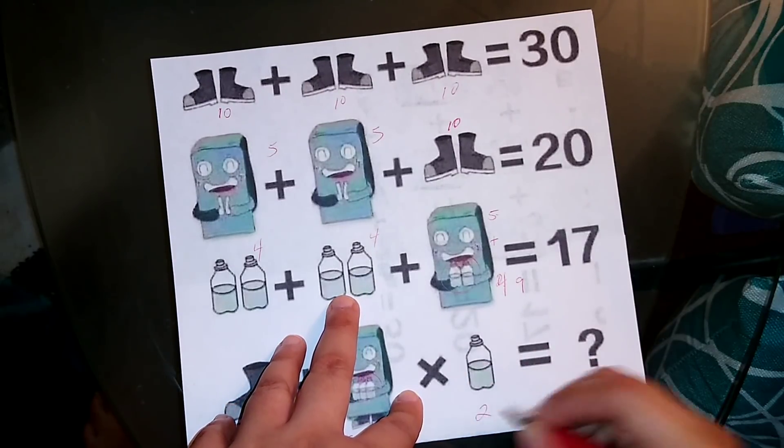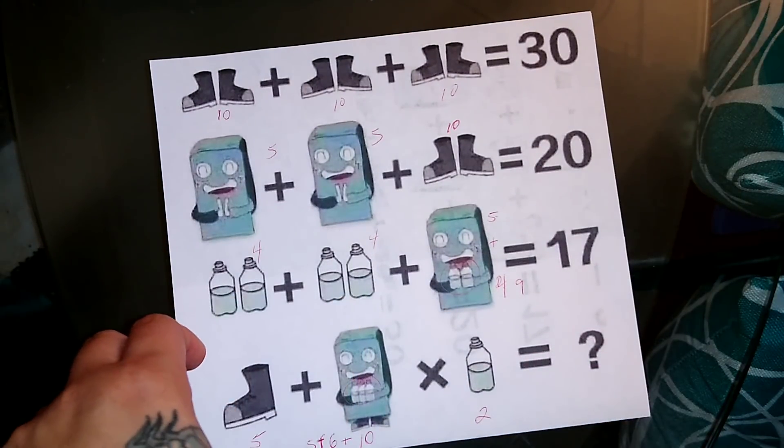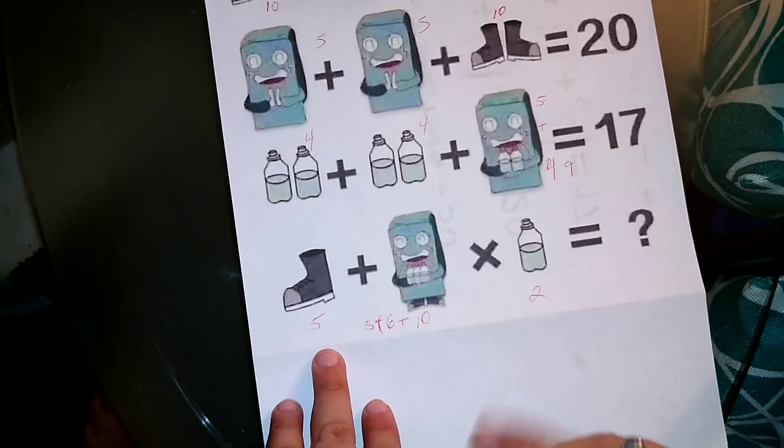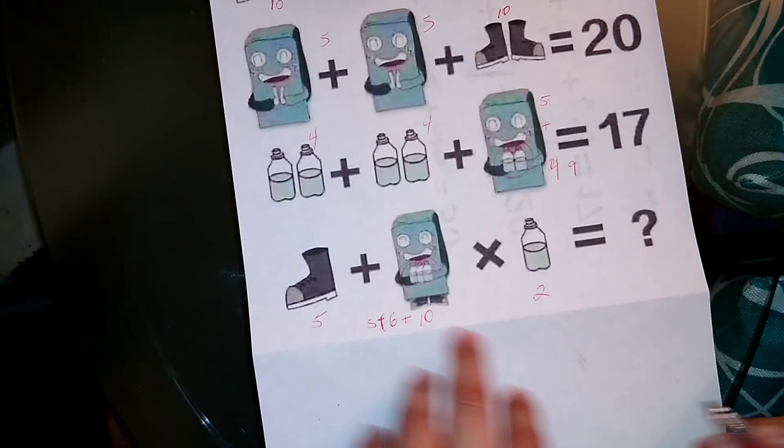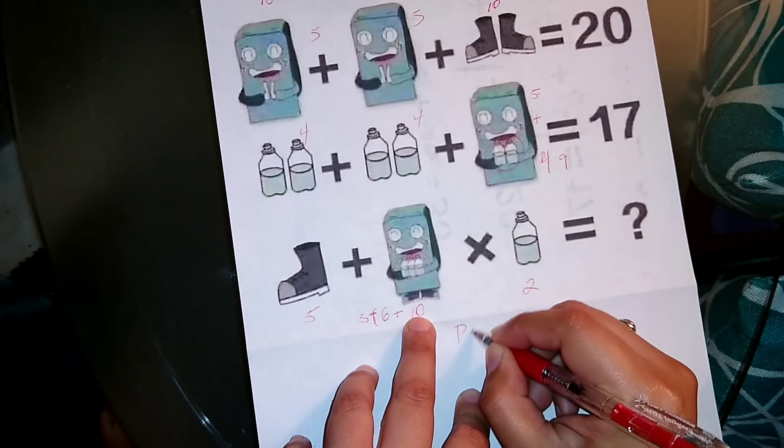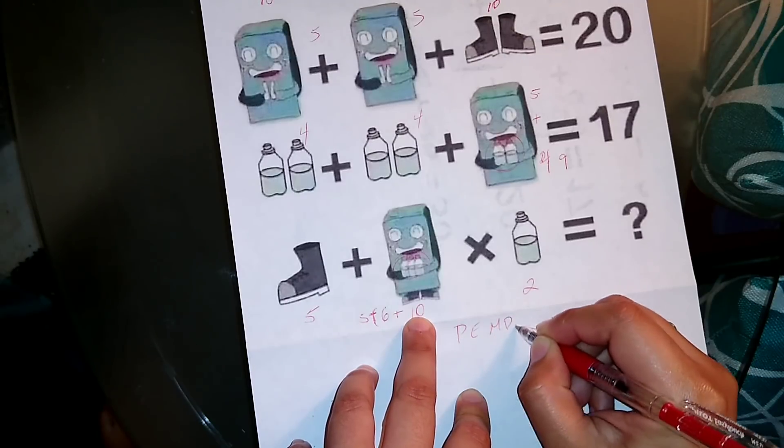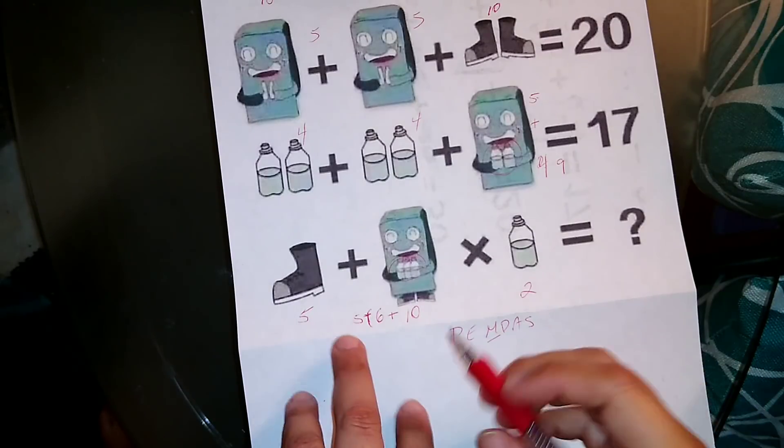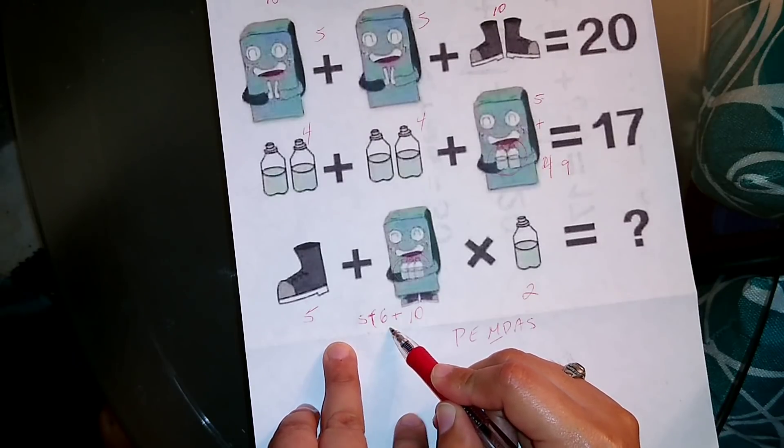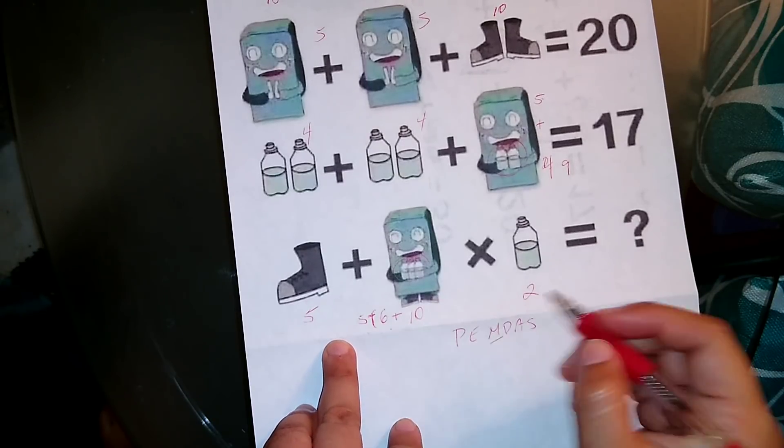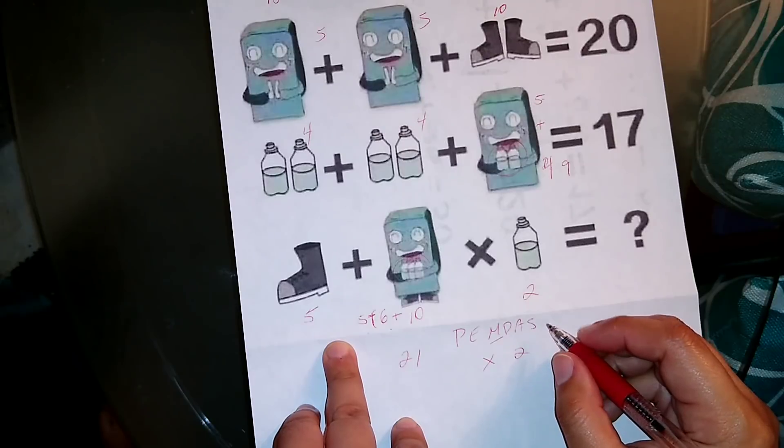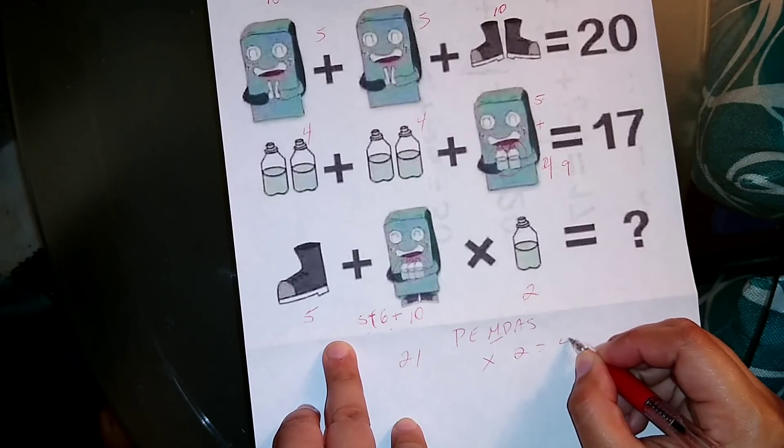The water bottle is 2, so we're going to do PEMDAS. We're going to do multiplication first, so it'll be 5 plus 6 is 11, plus 10 is 21, times 2 is 42.